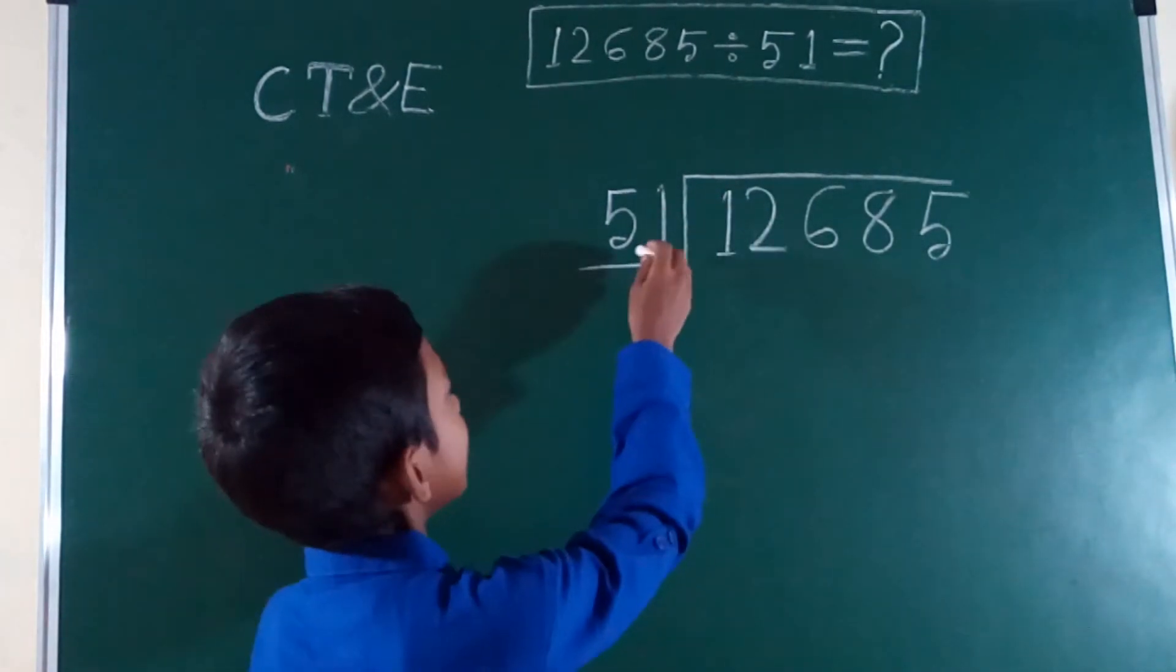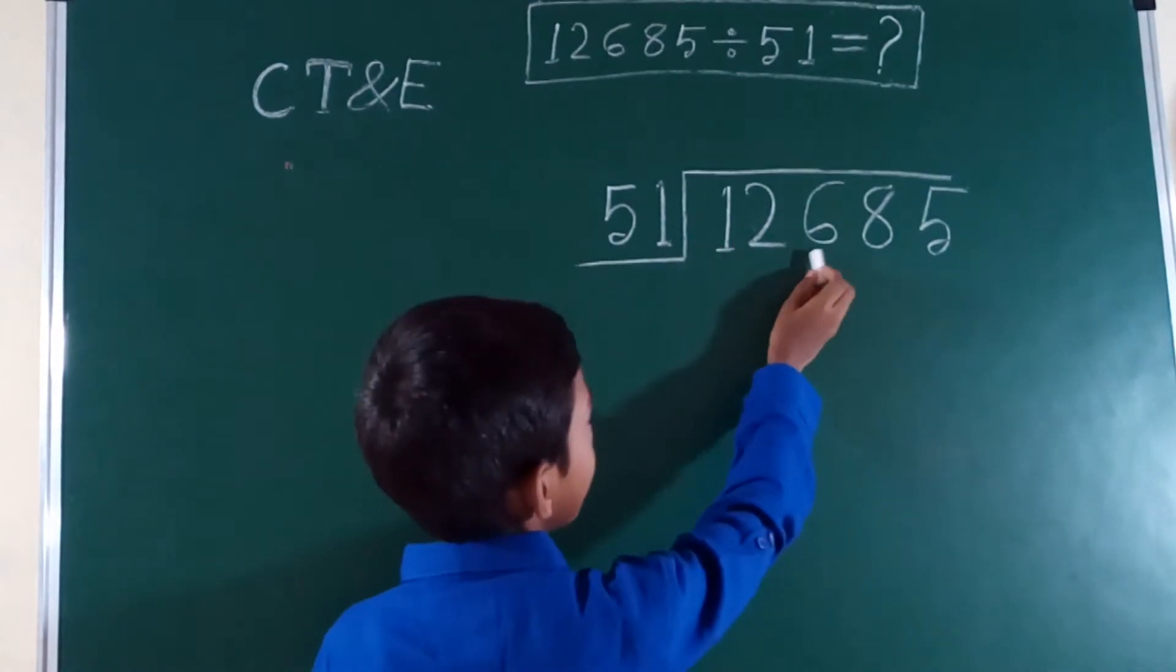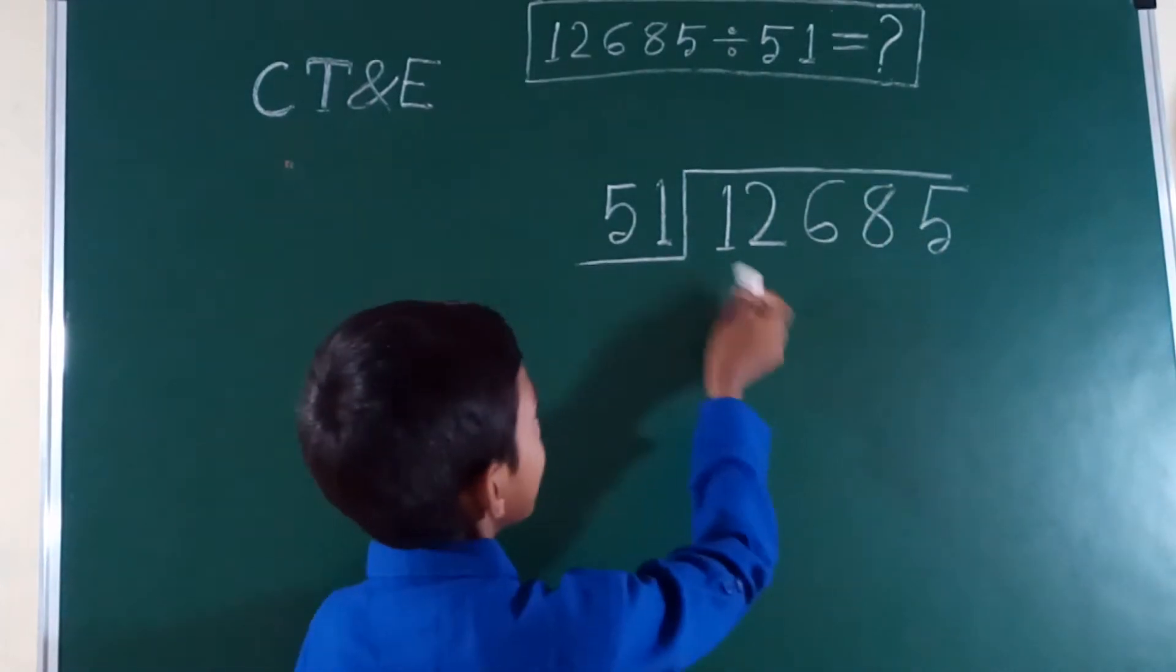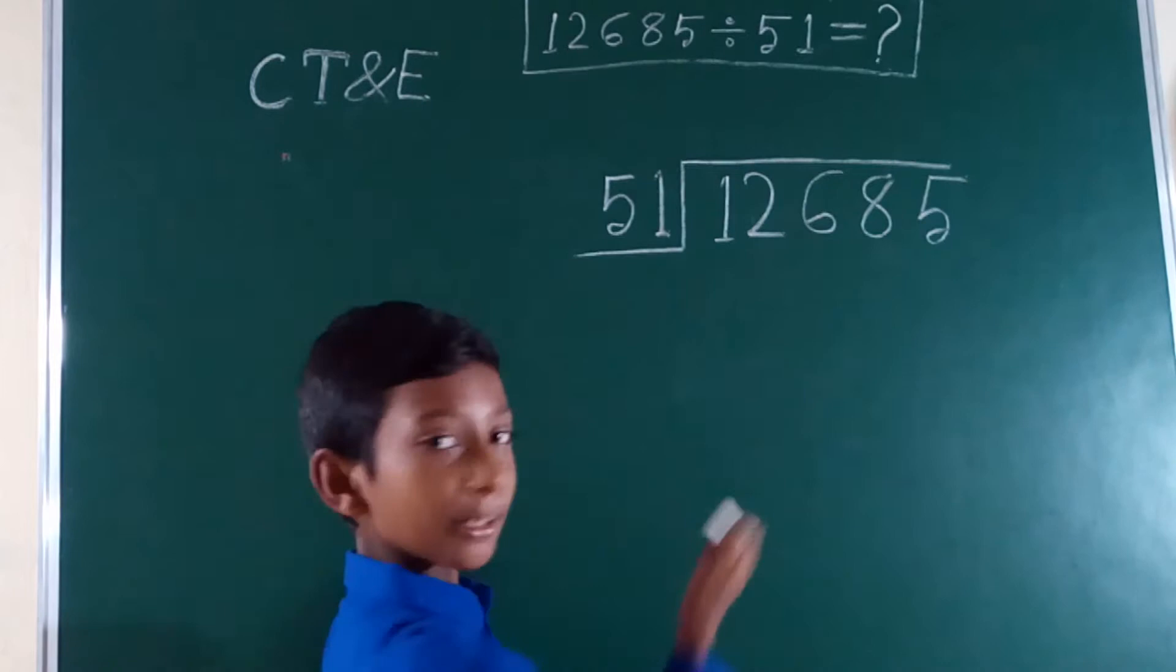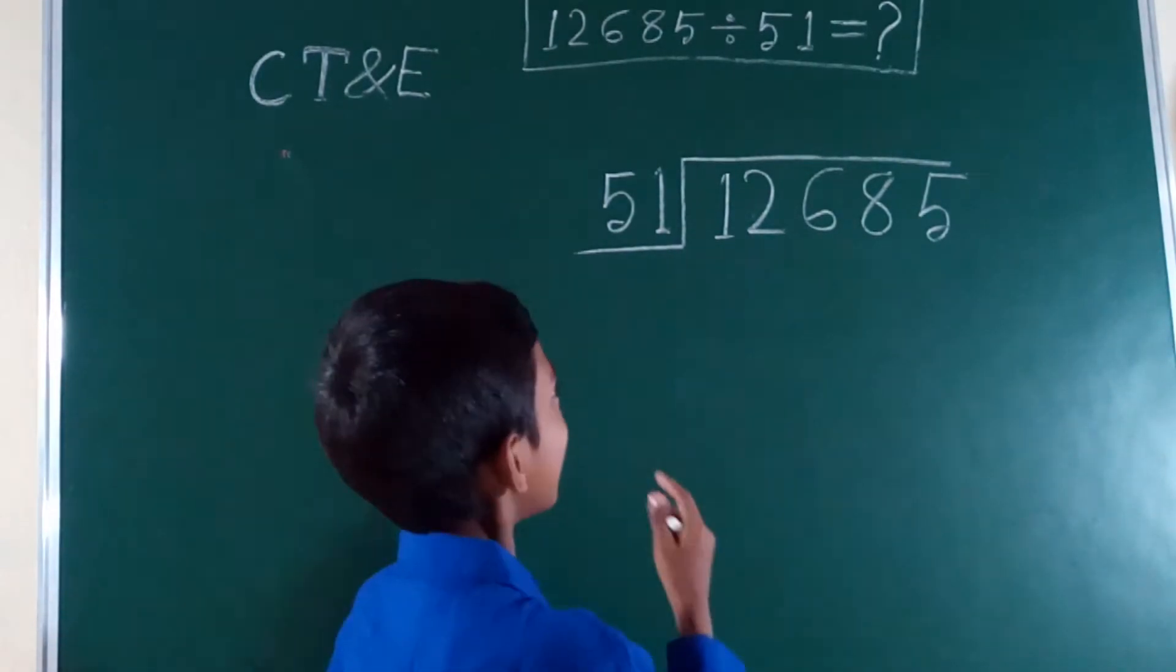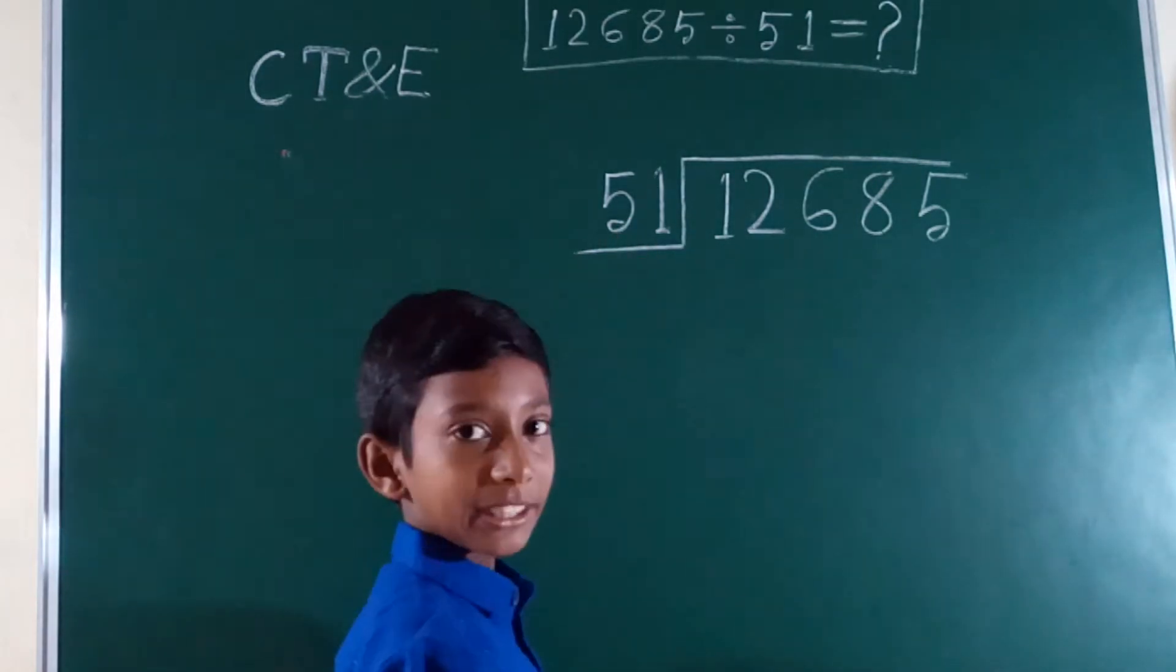First, this is the divisor, and this is the dividend. 12,685 is the dividend and 51 is the divisor. We have to find the quotient and remainder. I will tell you an easy way to learn two-digit number division.